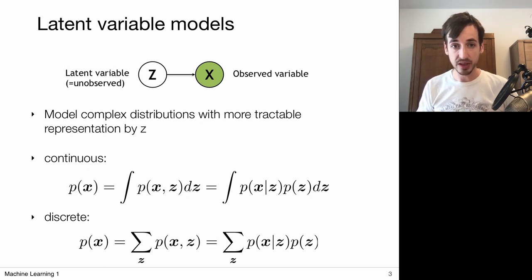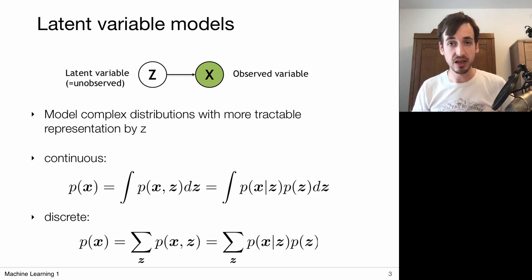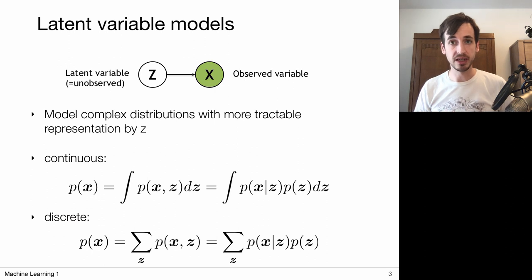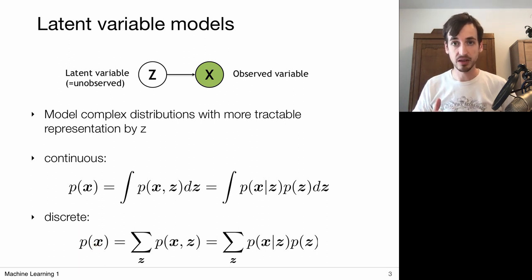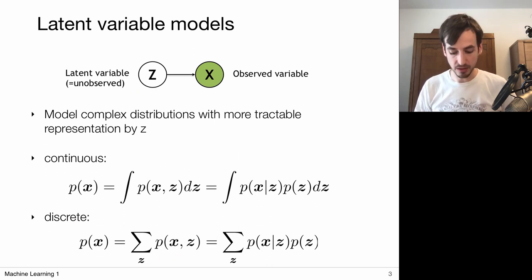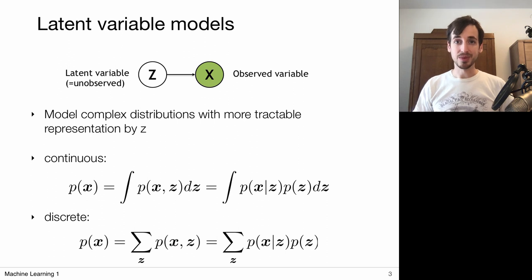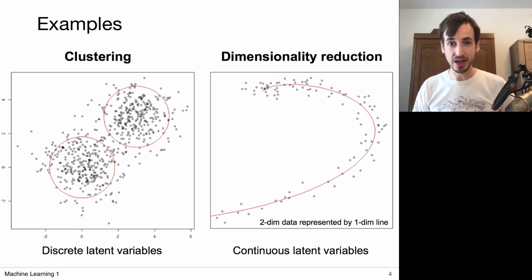That's the continuous situation, and the same applies to the discrete setting. When predicting house prices based on cities, Z could be my discrete latent variable — city number one, city number two, et cetera. My overall probability for a particular house price can then be obtained by summing the probabilities for that house price X over all cities. I hope this example makes sense, but let's move on to another example.